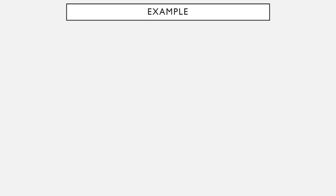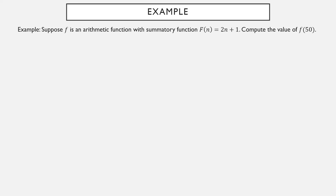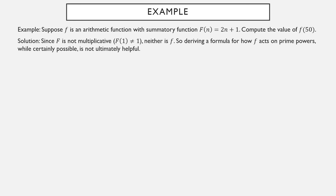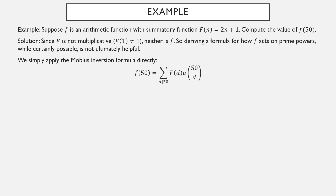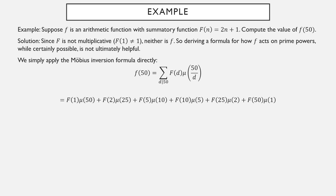Let's close with one more example. Suppose f is an arithmetic function whose summatory function is F(n) = 2n + 1. Can we compute f(50)? Capital F is not multiplicative — F(1) = 3, not 1 — so the original function f is also not multiplicative. Deriving a formula for how f acts on prime powers is doable but not helpful here since f isn't multiplicative. Instead we apply the Möbius inversion formula directly: f(50) = Σ_{d|50} F(d)·µ(50/d). The factors of 50 are simply 1, 2, 5, 10, 25, and 50.